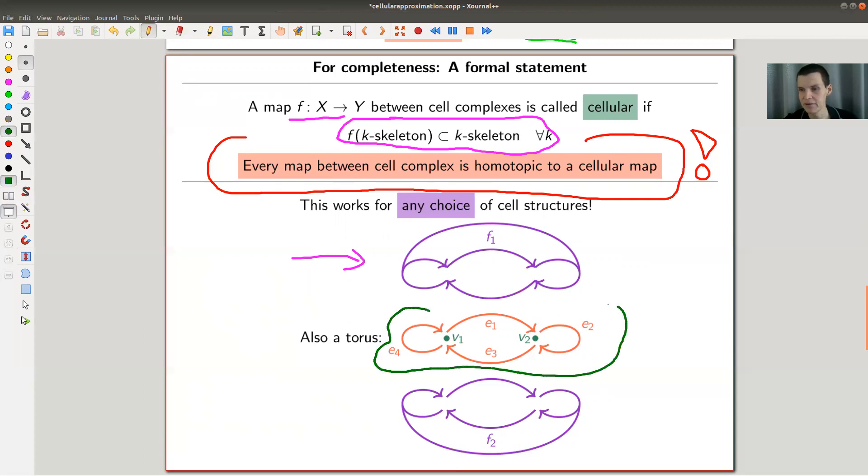So if you would use this cell structure of the torus, you could do the same. So the one skeleton is this piece here. So this would be the T^1 skeleton. It looks different from the other one, but you could still homotop your S^1's such that they are completely contained in the one skeleton. Amazing statement. Works in any dimension.